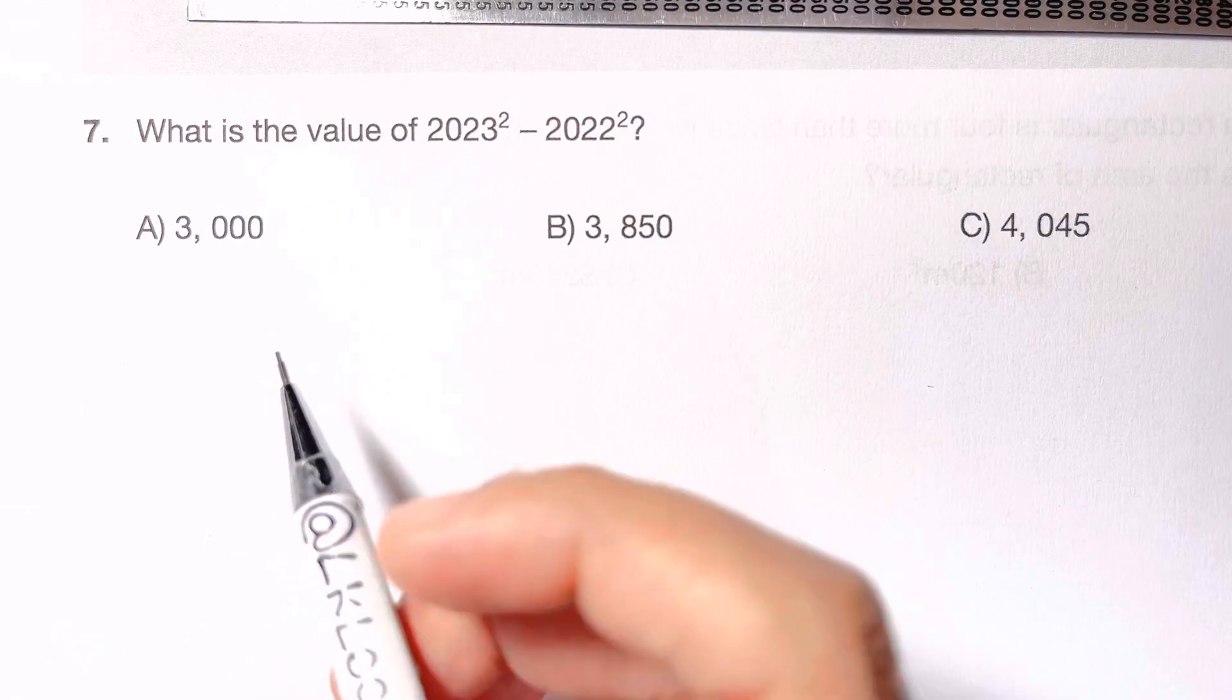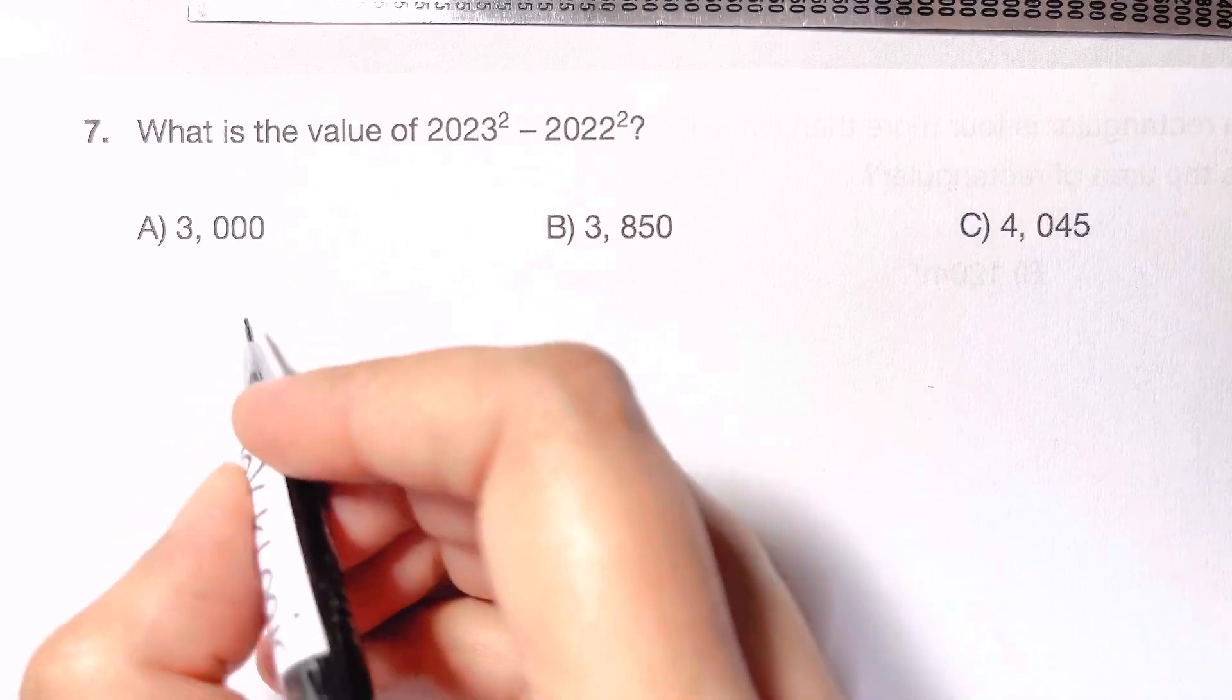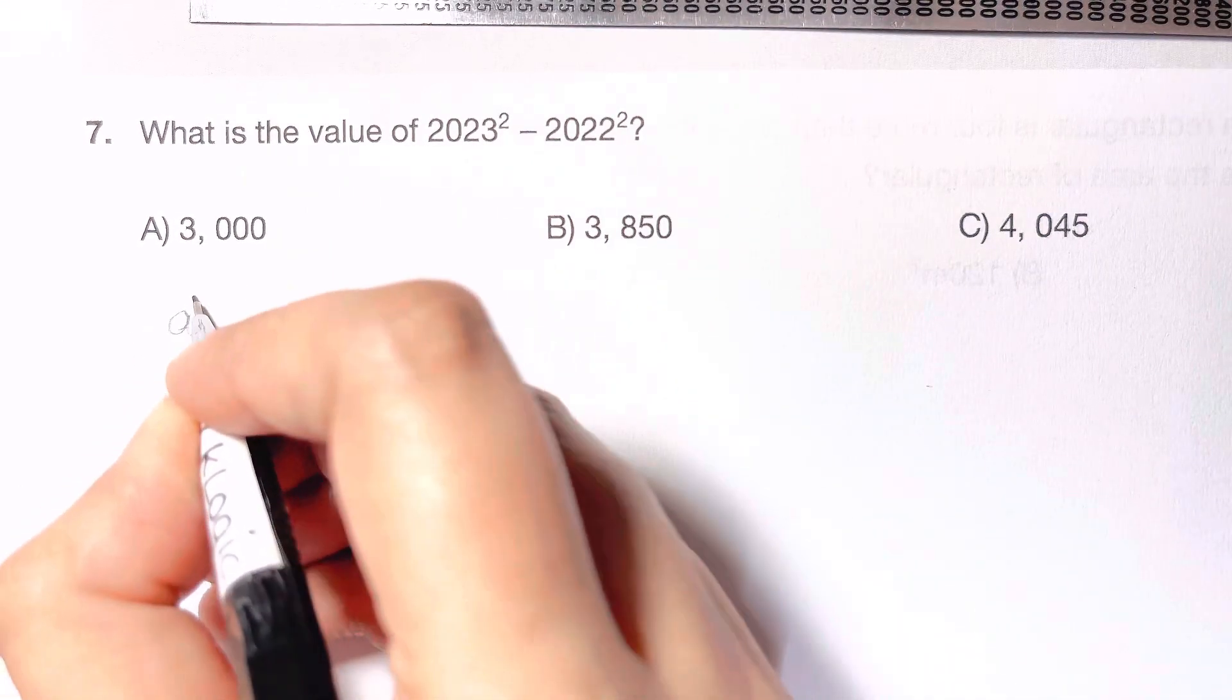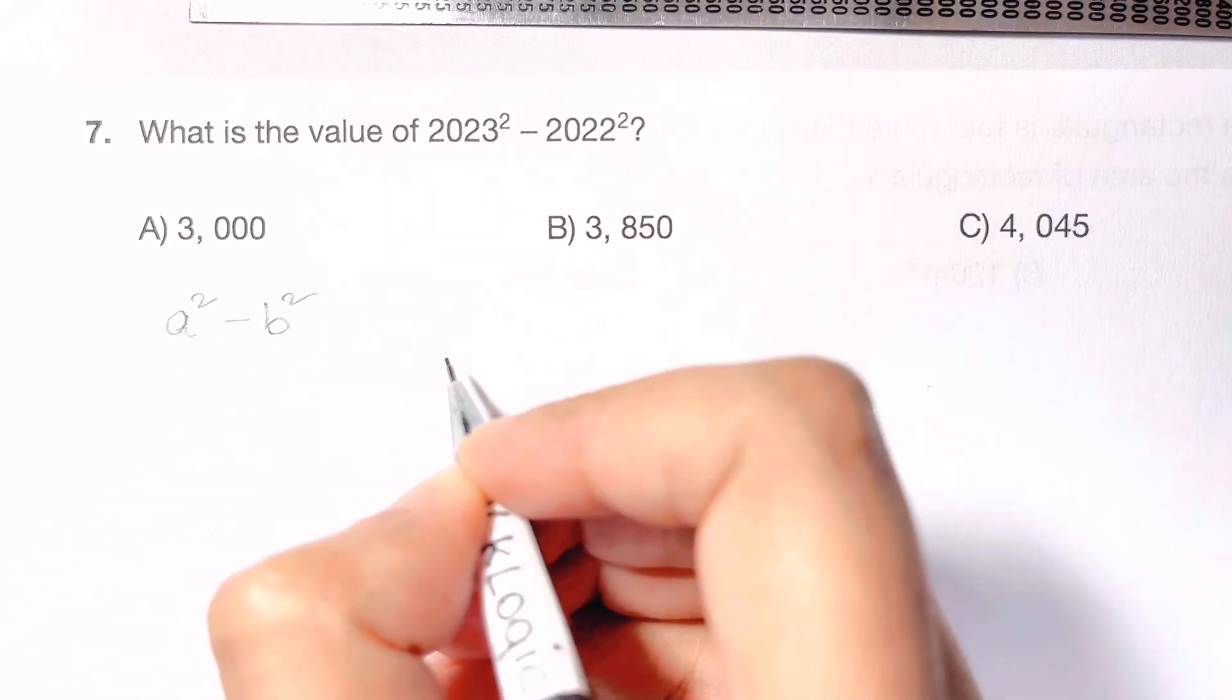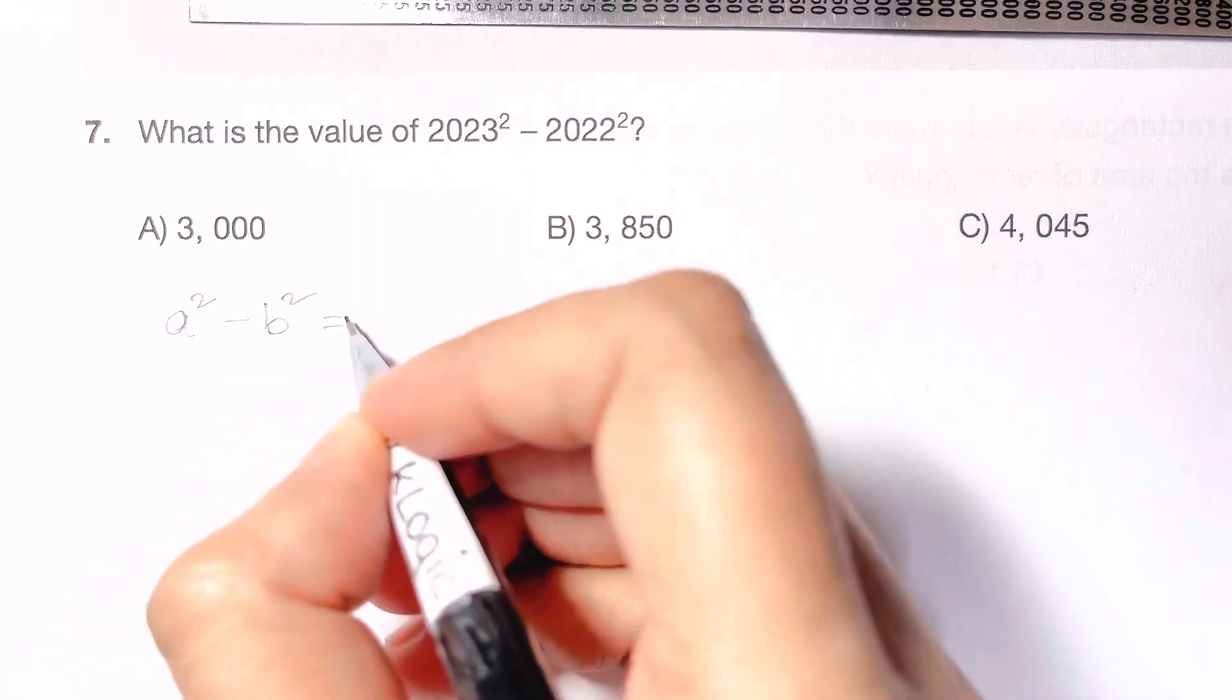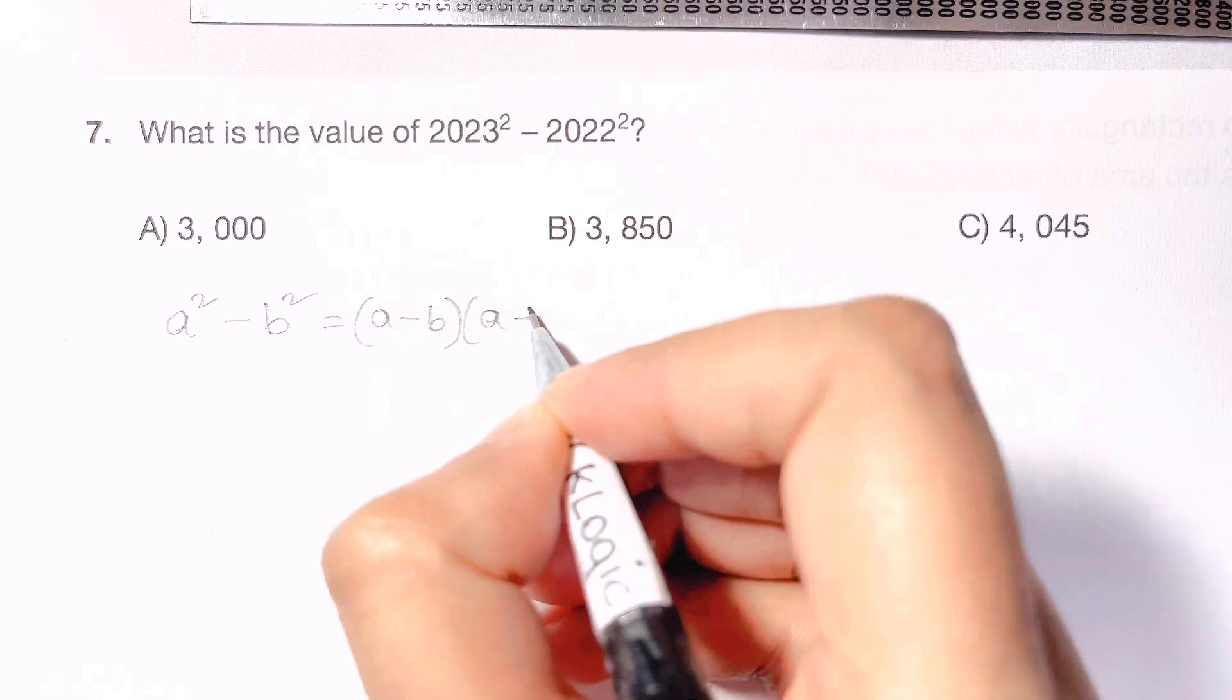There is an identity which we are going to write down. What is that identity? It is a super cool identity. A squared minus B squared. Now you would know what I am going to do. A squared minus B squared is A minus B times A plus B.